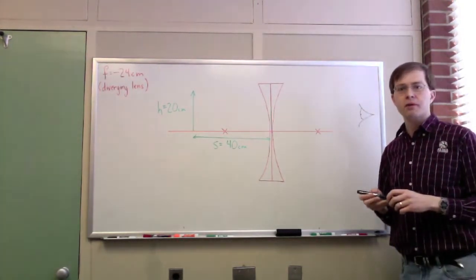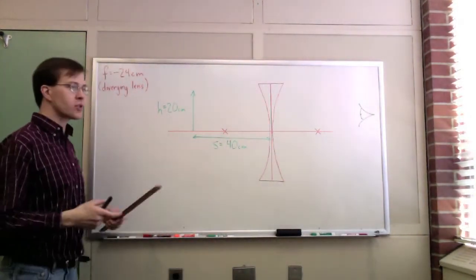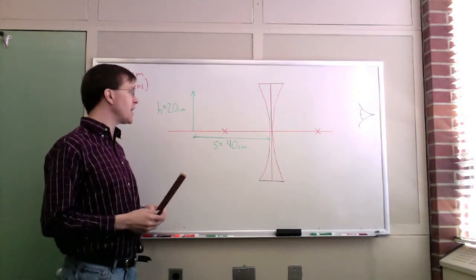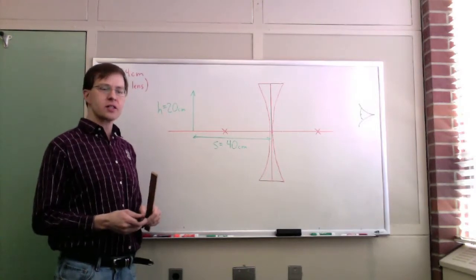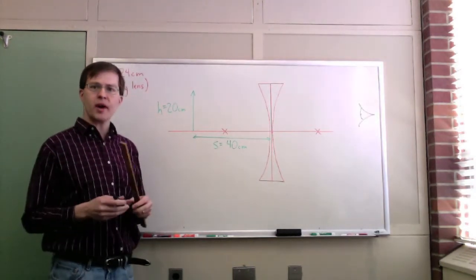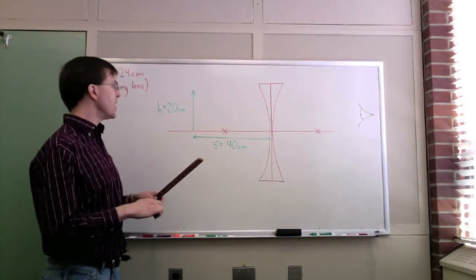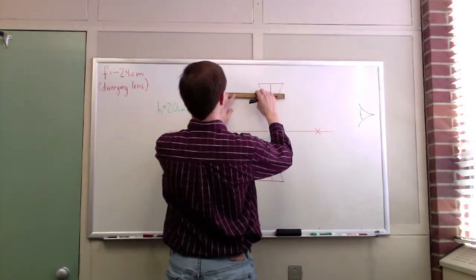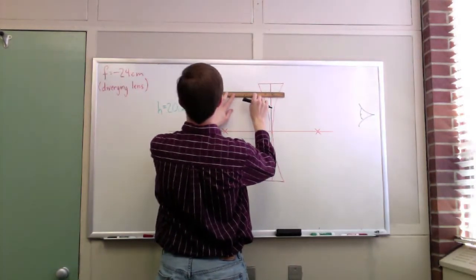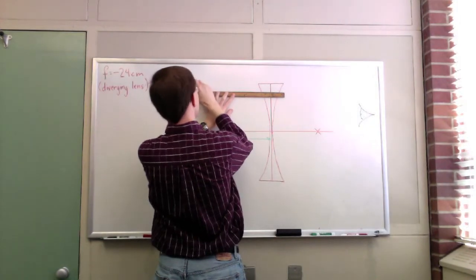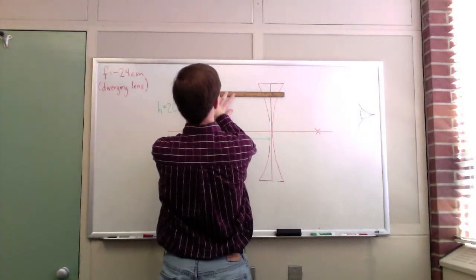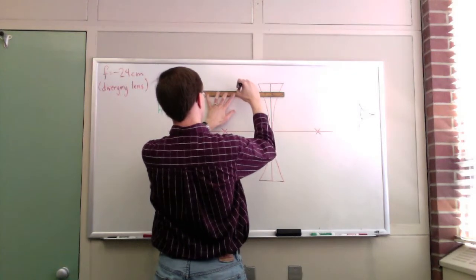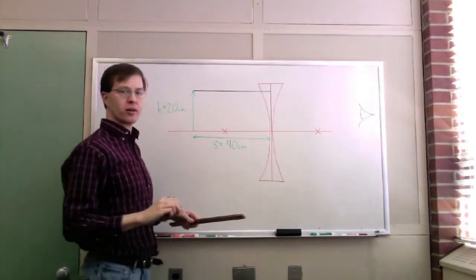I want to use ray tracing to find the location of the image. Just like with converging lenses, we use the same three principal rays — the only difference is we need to pay attention to the fact that this is a diverging lens. Principal ray number one is the same as always: it starts out going parallel to the axis of the lens.